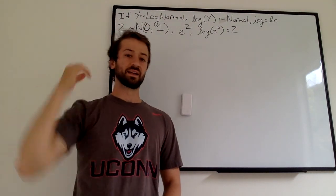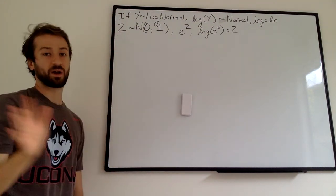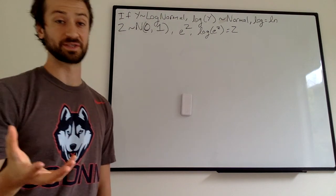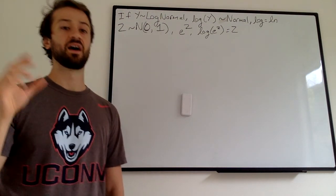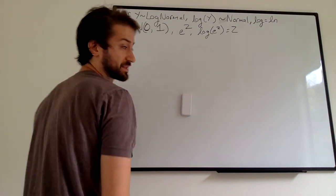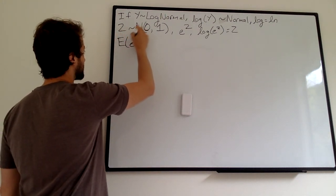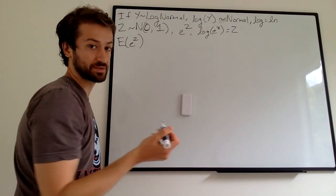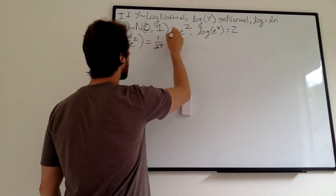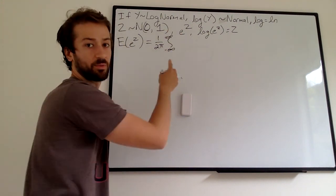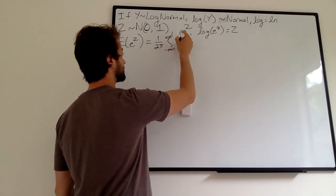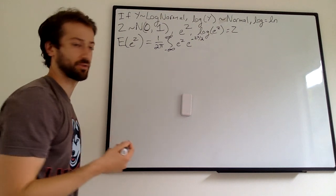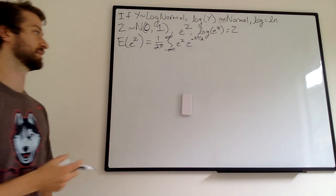In this video, we're going to work on calculating the expectation of a log-normal. We're going to start by calculating the expectation of e to the z. We have the expectation of a function of a random variable — e to the power of a random variable — so we can just use LOTUS. We write our integral: z is a normal, goes from negative infinity to infinity, and then we have the function of z times the density of z. The density of z is e to negative z squared over 2. That's the density of a standard normal variable. I already took out the 1 over sqrt(2π) to get it out of the integral.